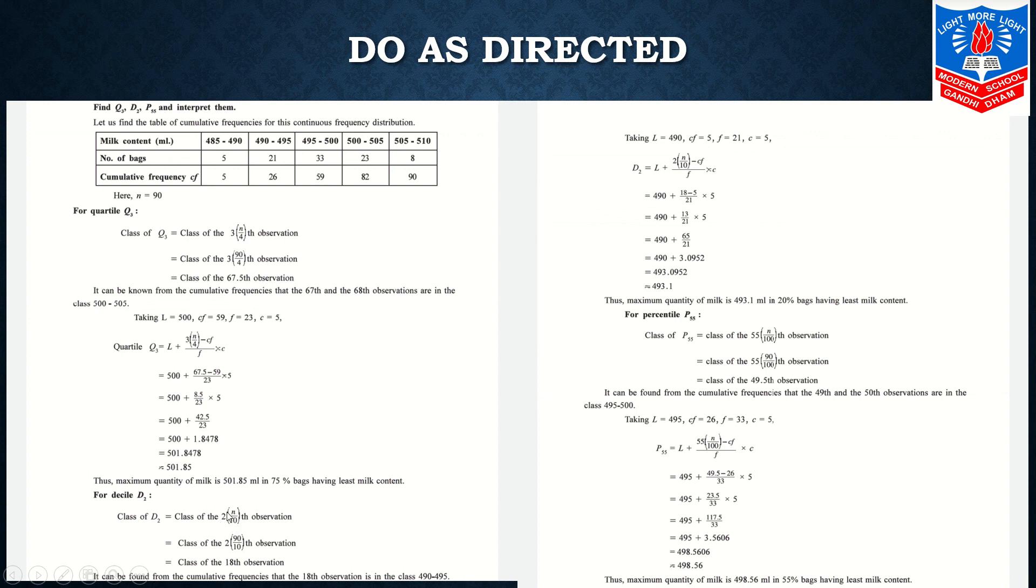Same for D2 you will do the calculation. 2 comes in place of j, N remains as it is, 90 divided by 10 because deciles divide data into 10 parts. I hope I am clear. Same calculation going on, 90 by 10 you will get 9, multiply by 2, you will get 18th observation. 18th observation in CFI column, 18 comes under 26. So our class will be 490 to 495. L is 490, CFI is 5, F is 21, C is 5. Put all the details in the formula, you will get it.